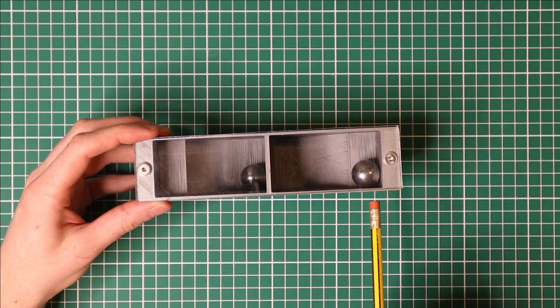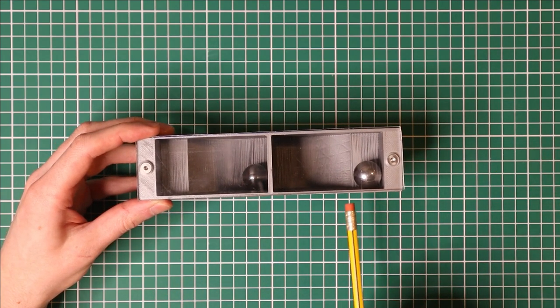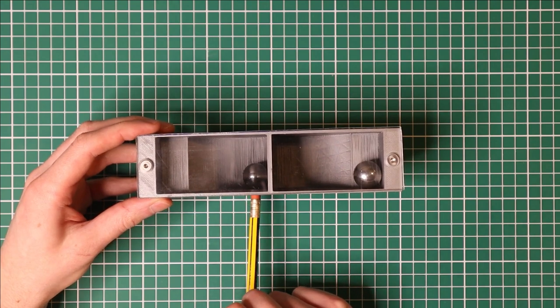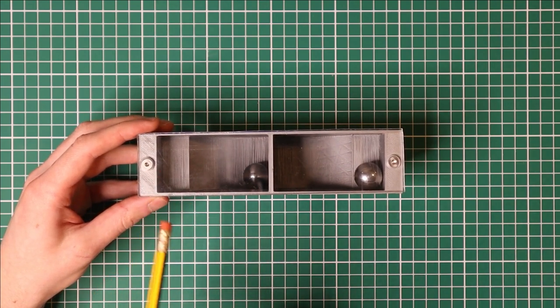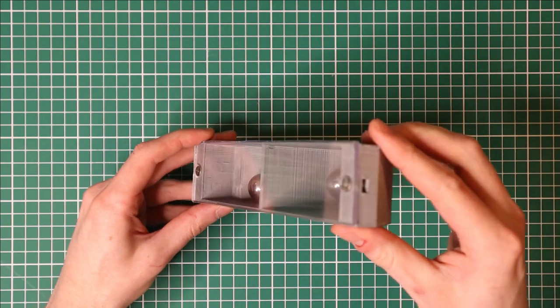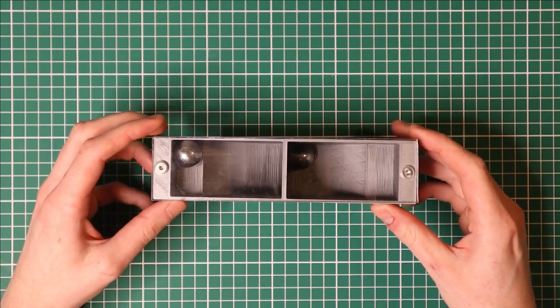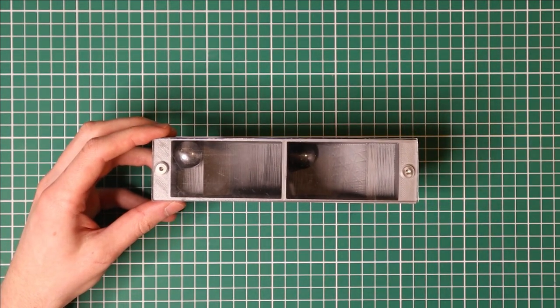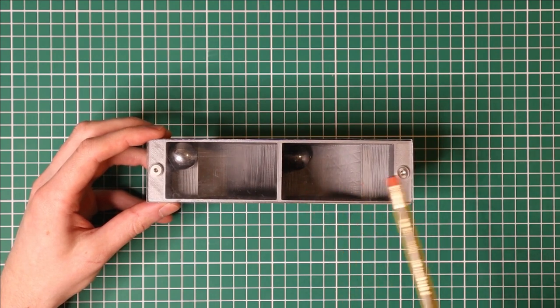But the question is, how can we get this steel ball to rest on this ledge while at the same time getting this steel ball on this ledge over here? And of course if I just tilt it the other way like this, now I have this steel ball on its ledge, but now this one has fallen off.